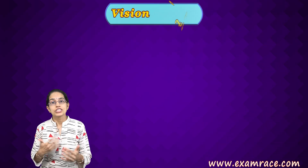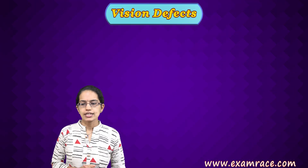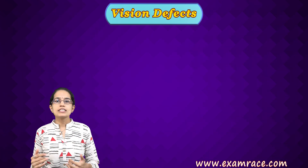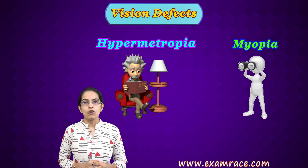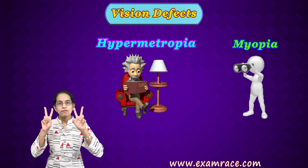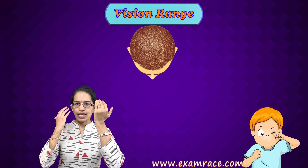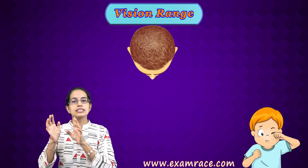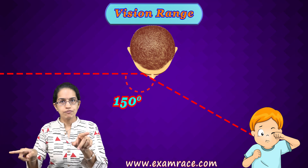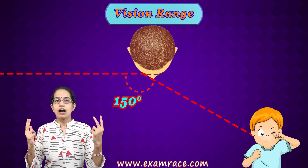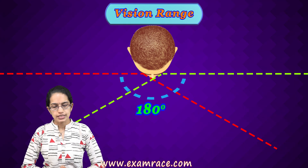We'll understand vision defects. There are various forms of vision defects that are seen, the most common being myopia and hypermetropia. But before that, let's understand our vision range. With one eye, you have a vision of nearly 150 degrees. However, when you focus with both eyes, you have a vision of 180 degrees.